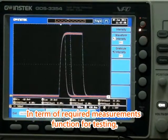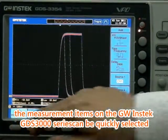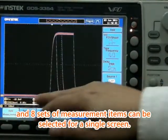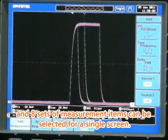In terms of required measurement functions for testing, the measurement items on the GW INSTEK GDS-3000 series can be quickly selected and 8 sets of measurement items can be selected for a single screen.